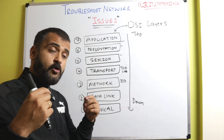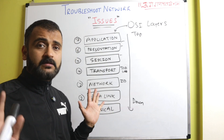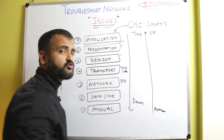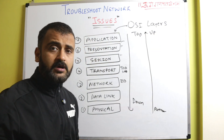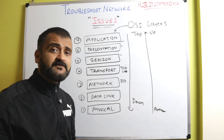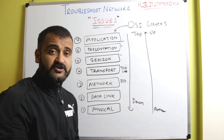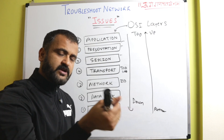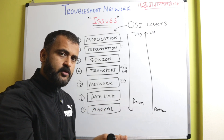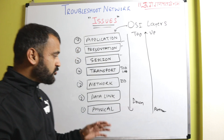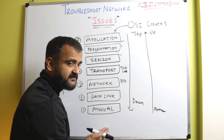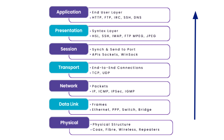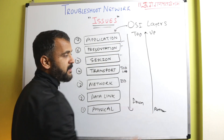In all possibilities, the problem will be in those top layers or maybe at the transport layer. But if your whole office is not able to access anything, you deploy a bottom-up approach. For example, at home when you suddenly lose internet connectivity and your whole house is virtually down, the first thing you do is check if your router is plugged in and the cable is connected properly. You are starting from the physical layer, checking cables and modems. This is the bottom-up approach.